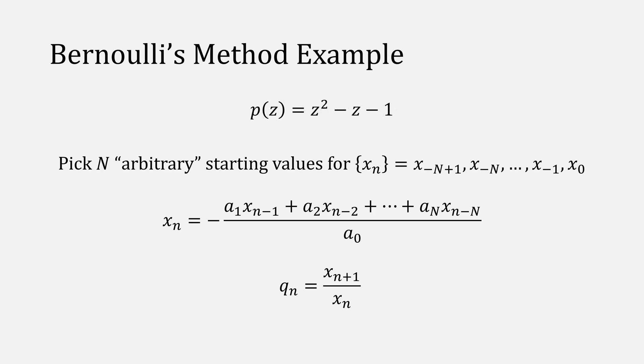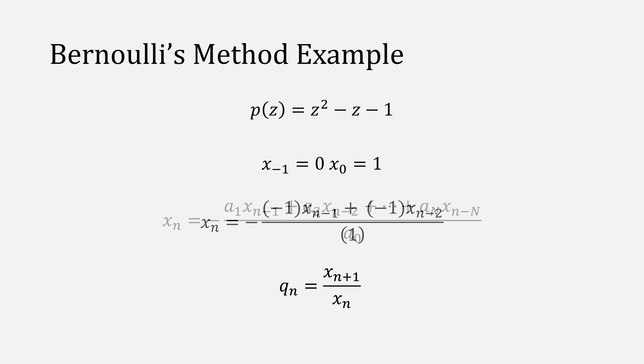Let's use as an example z squared minus z minus 1. Our starting x terms will just be 0 and 1.